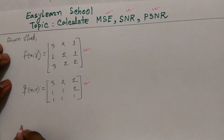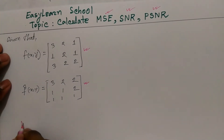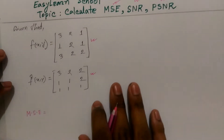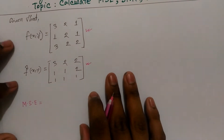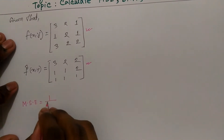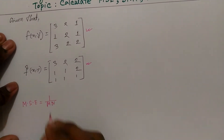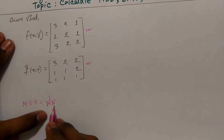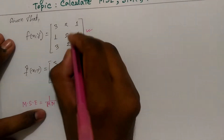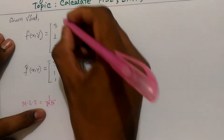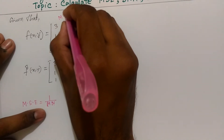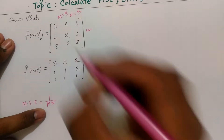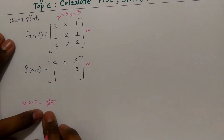This means MSC, SNR and PSNR. So MSC is equal to M. SNR.